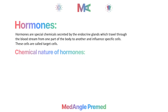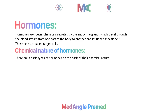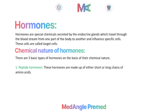Now let's talk about the chemical nature of hormones. On the basis of chemical nature, we have three types of hormones. The first are called peptide hormones. These are hormones made from amino acids, either short or long chains of amino acids. Examples include insulin and glucagon.